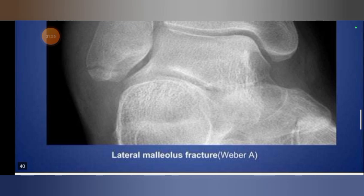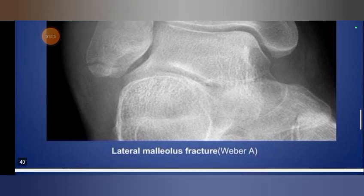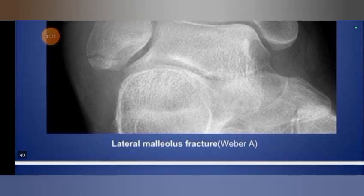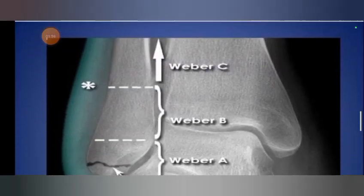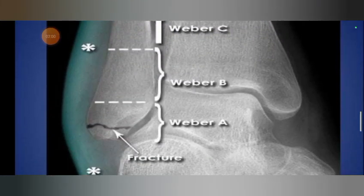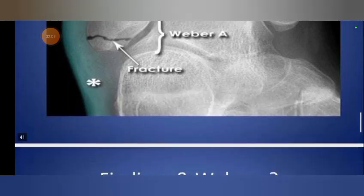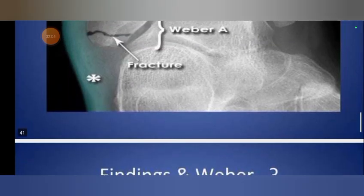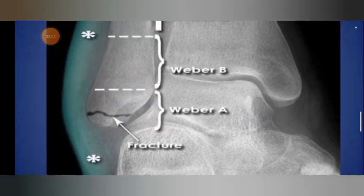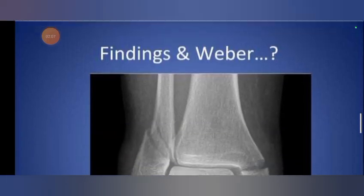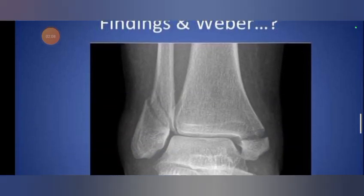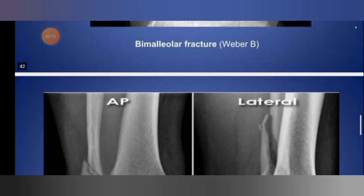This is the picture of the Weber classification showing Weber A, Weber B, and Weber C lateral malleolar fractures. This diagram shows the sites of the fracture and the key findings for each Weber category.